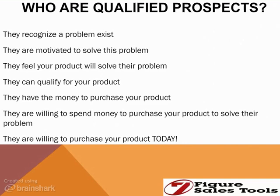Lastly, they have to be willing to purchase your product or service today. To summarize the criteria: recognize a problem exists, motivated to solve the problem, feel your product or service will solve it, qualify for the product, have the money, be willing to spend it, and be willing to spend it today. Whatever your sales cycle is, when you get down to the end they must be willing to buy. Know what a qualified prospect is so you spend your time making presentations to the right people.